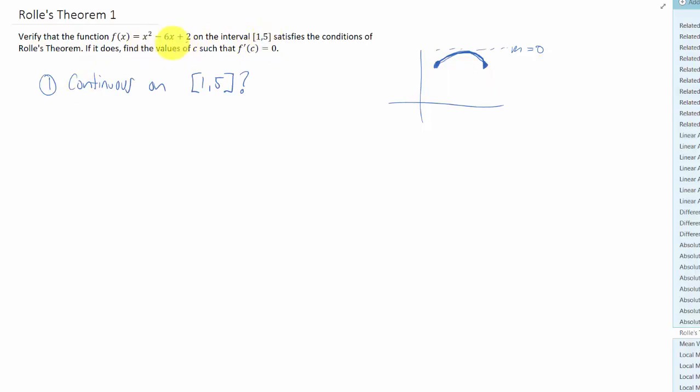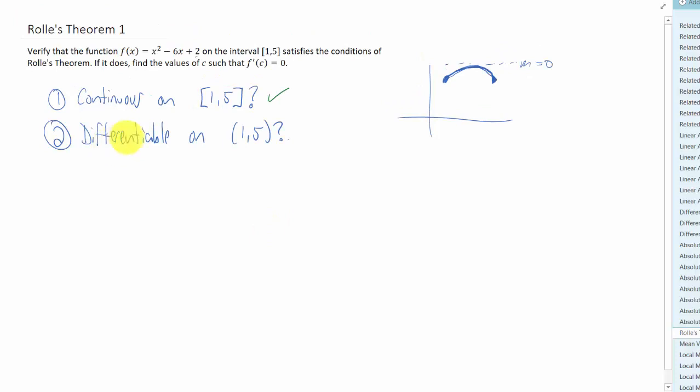This is a polynomial, and polynomials are always continuous. The next condition is that this function is differentiable on the open interval one to five. Yes, it is differentiable. We would get 2x minus six as the derivative, and that is continuous everywhere, not just on one to five. So this condition is met as well.